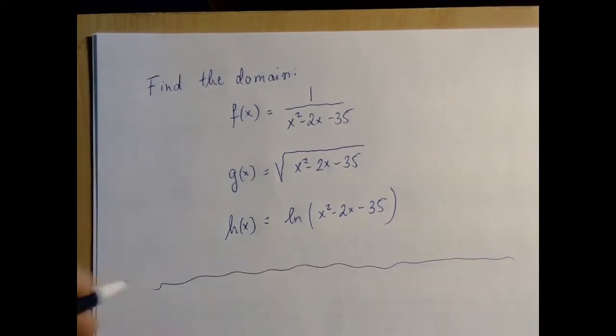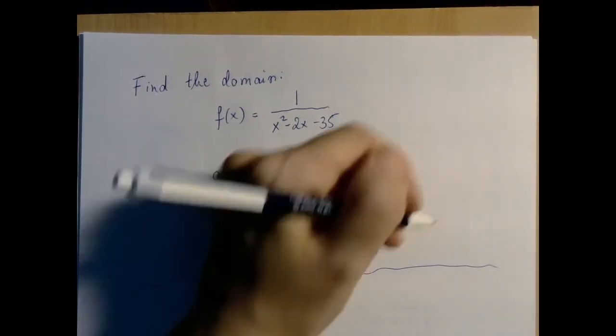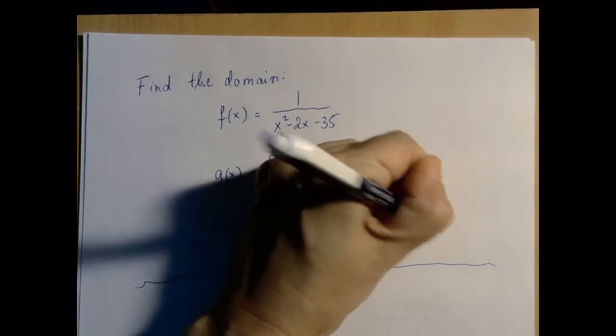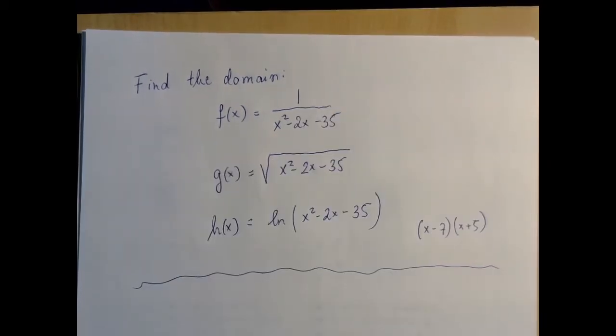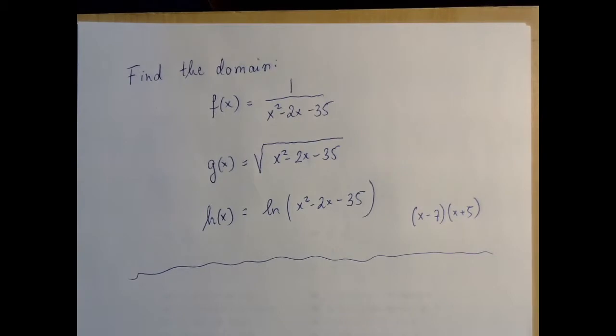So first, let us just acknowledge that this thing factors as x minus seven times x plus five. There are all kinds of ways to get there, but this is not our topic today.